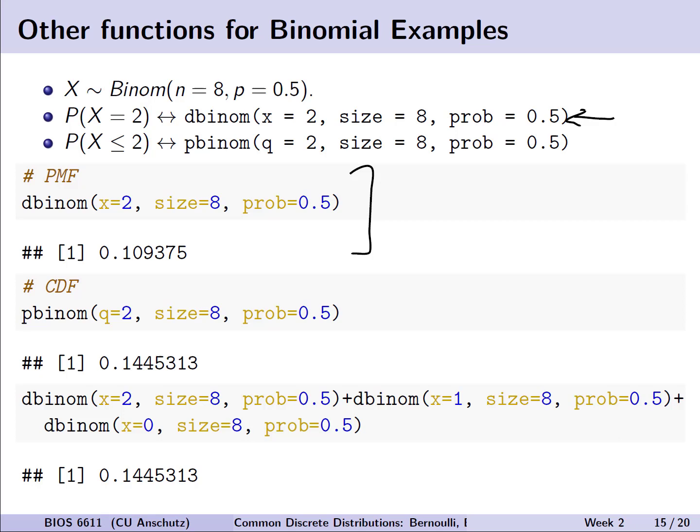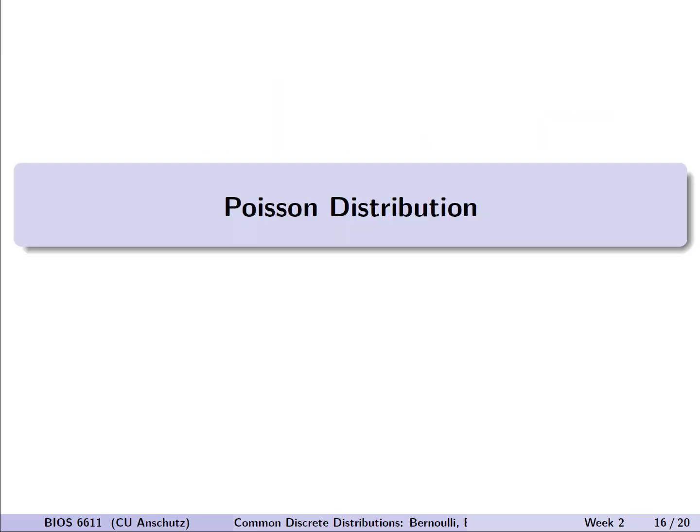Likewise, if we wanted to say, what is the CDF when X is less than or equal to 2? We see that that is using the pbinom function, which is equivalent to actually using dbinom over and over again for 0, 1, and 2 for our possible values of X.